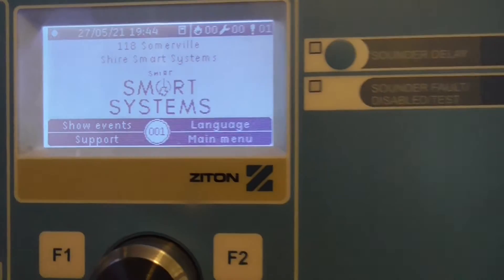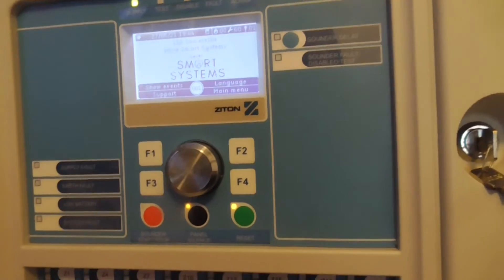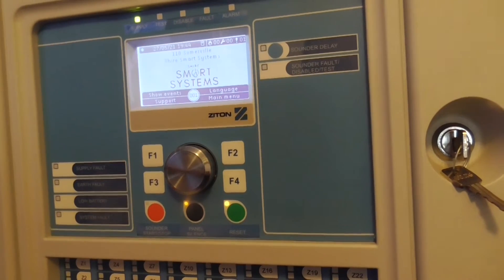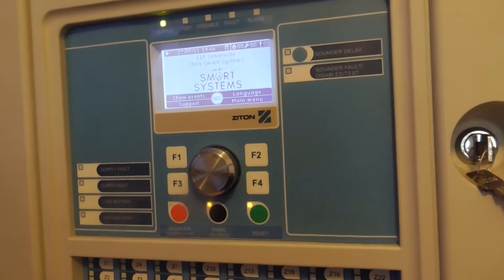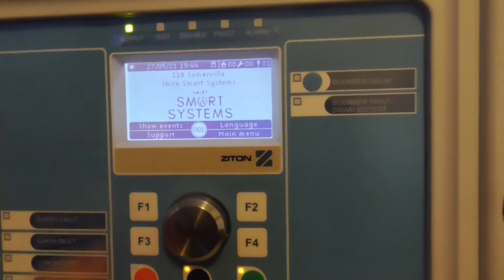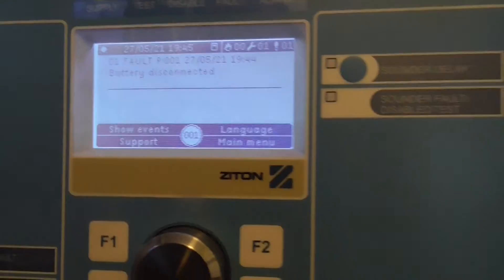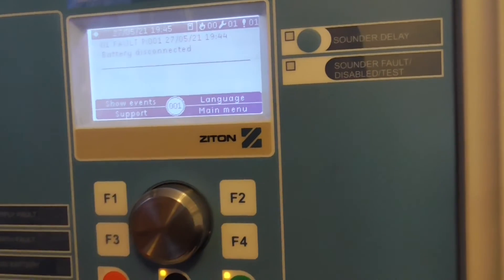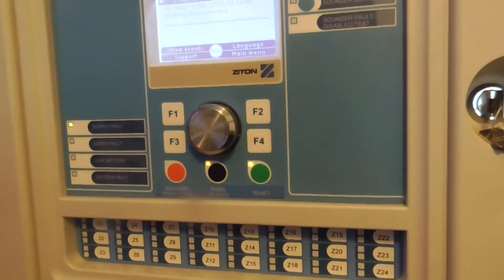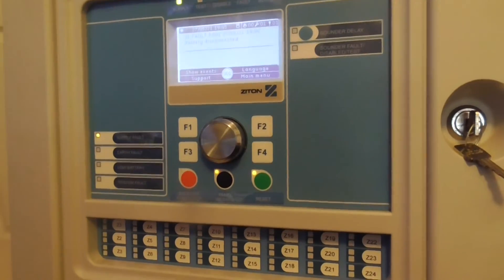As you can see, this is the logo that has already been on this panel because this is a used panel which I got from eBay. I've got this for a very cheap price on eBay. This Zyton ZP2 panel, it's already got a logo on it, whoever had this panel before. By the way, there's no batteries. It says battery disconnected because there's no batteries in this panel. I'm not sure if I'll get any batteries to put in this panel because I don't think I will because it's only demonstration.